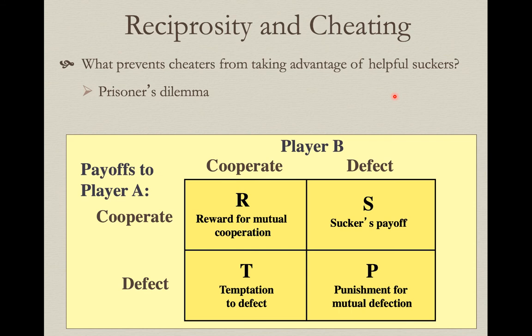The problem with reciprocity is defined by the prisoner's dilemma. Two individuals have the potential to cooperate and get a certain reward. But if player A cooperates while player B defects, player A gets the sucker's payoff — they're being taken advantage of.